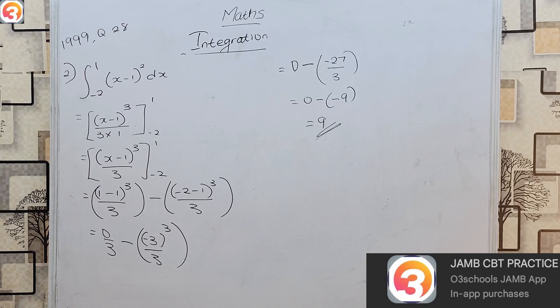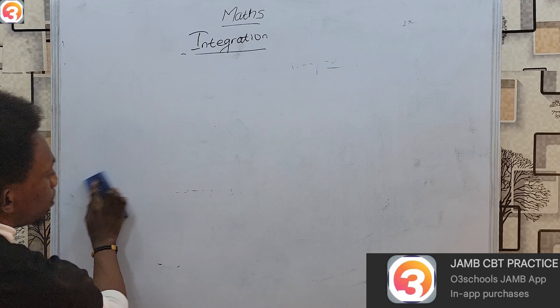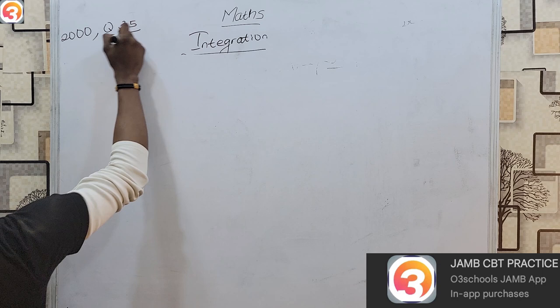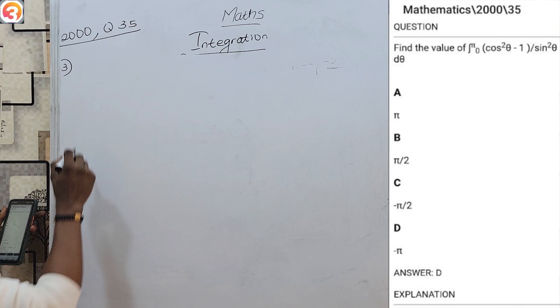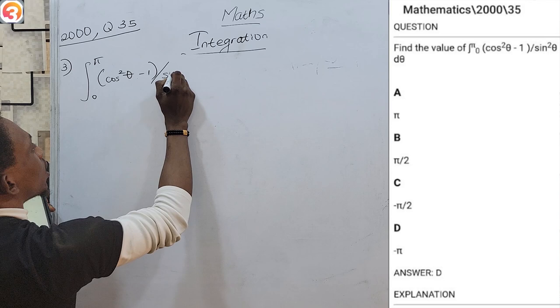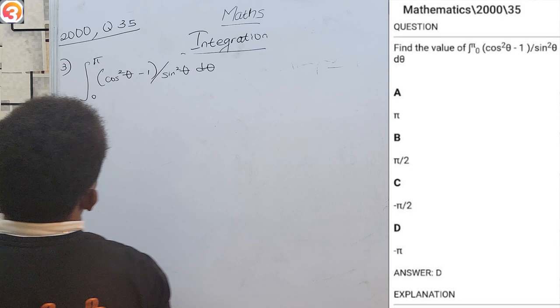Any of the methods you choose to use in your exam is entirely up to you. Now we move on to the year 2000, question 35. This is our third question and it's a bit interesting. It asks us to find the integral from π to 0 of (cos²θ − 1) over sin²θ dθ. The first thing you notice is that the variable is now θ instead of x — that doesn't mean much, the solving remains exactly the same.